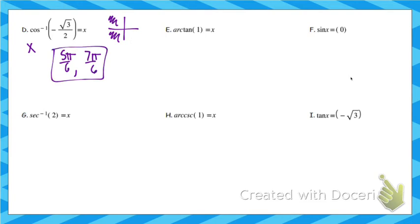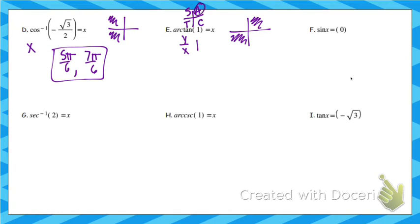Arc tan means tan inverse. What angle gives you y divided by x equal to 1? If y divided by x is 1, then y and x are the same, which happens at pi over 4 with the point (root 2 over 2, root 2 over 2). Tangent is positive in quadrant 1 and quadrant 3 — remember the acronym 'All Smarties Take Calculus' for which trig functions are positive. They're all positive in quadrant 1; tangent is positive in quadrant 3. So the answers are pi over 4 and 5 pi over 4.